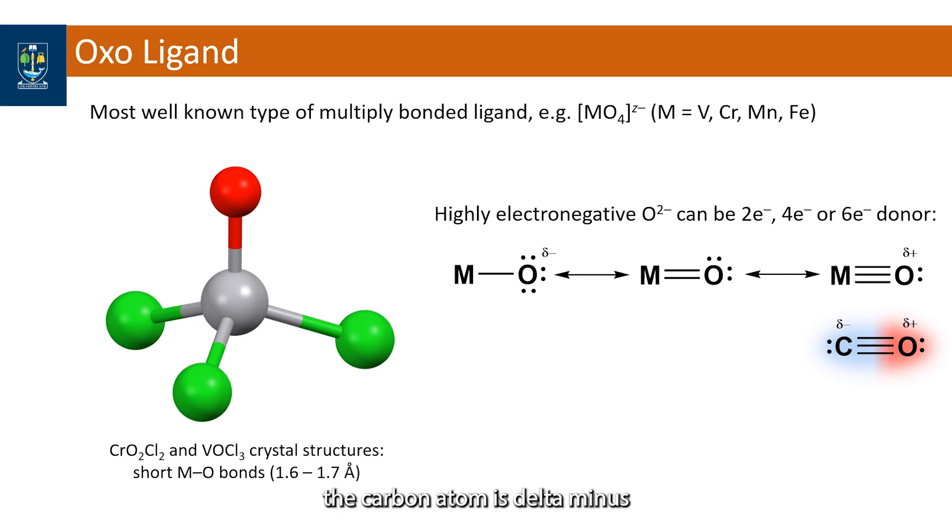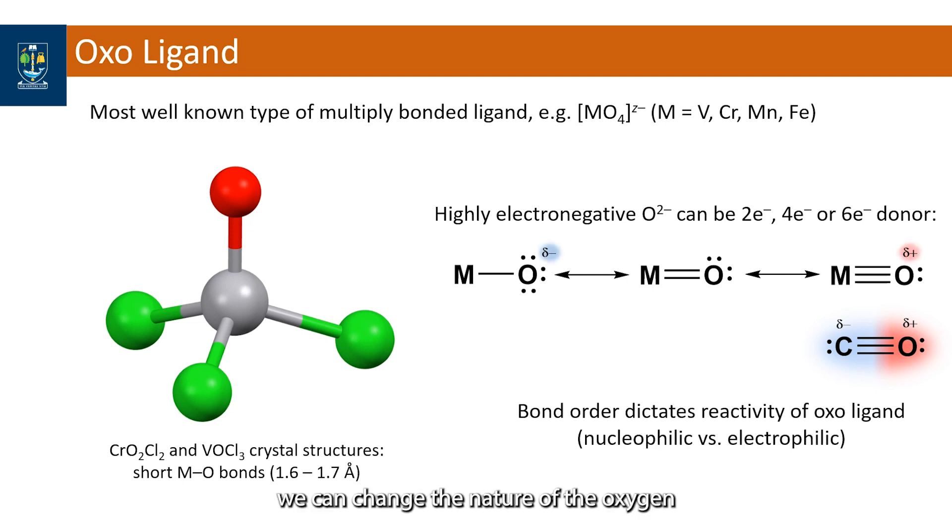Consequently, the carbon atom is delta minus, and as a ligand, CO binds through the lone pair of carbon being the more basic site. So depending on the bond order, in the metal oxo unit we can change the nature of the oxygen as nucleophilic on the left to electrophilic on the right.